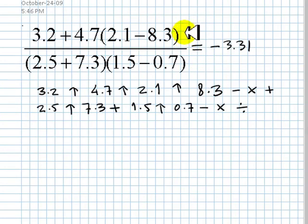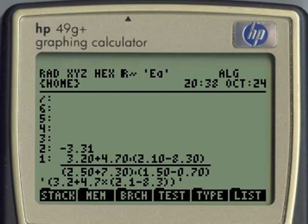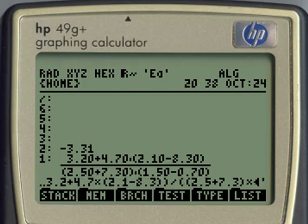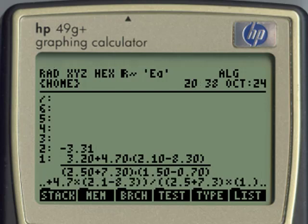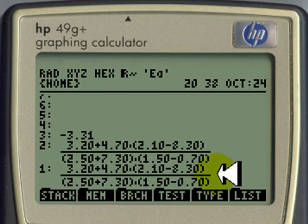The other one is between apostrophes. Apostrophe. And then I type, parenthesis for the numerator, 3.2 plus 4.7, that multiplies, open parenthesis, 2.1 minus 8.3. And then I get out of there with the right key, divide, parenthesis for the denominator, and parenthesis for the first factor in the denominator, 2.5 plus 7.3. Out of that one, multiply, and other parenthesis, 1.5 minus .7. That is the expression. I type enter and the expression goes to the stack.